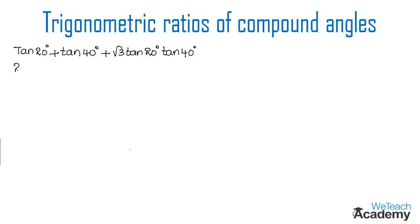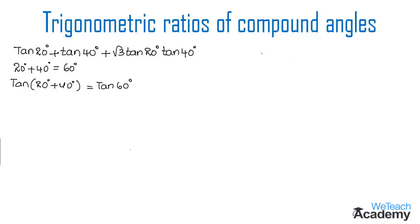Let us add them: 20° plus 40° equals 60°. Now let us apply tan on both sides. So applying tan on both sides we get tan(20° + 40°) which is equal to tan 60°. By applying the formula of tan(a+b), the formula is tan a plus tan b divided by 1 minus tan a tan b.